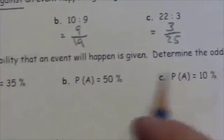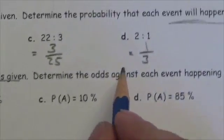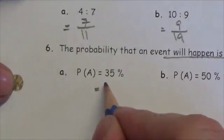The question says that the probability that an event will happen is given. We want to figure out the odds against each event happening. So 35% here.